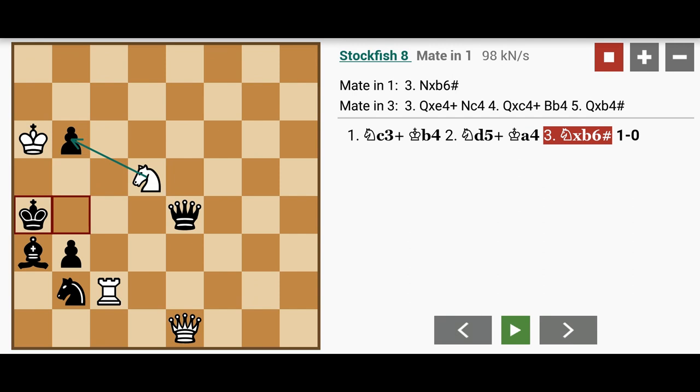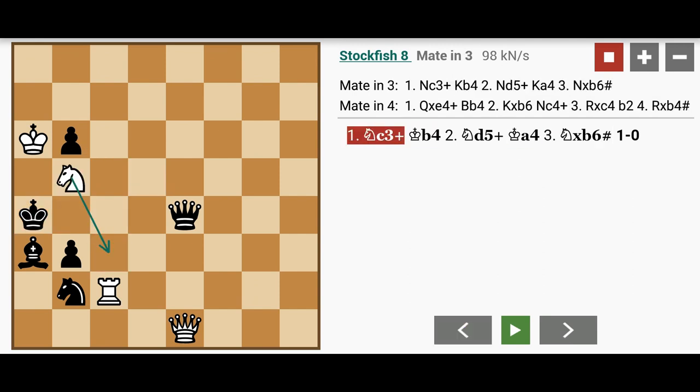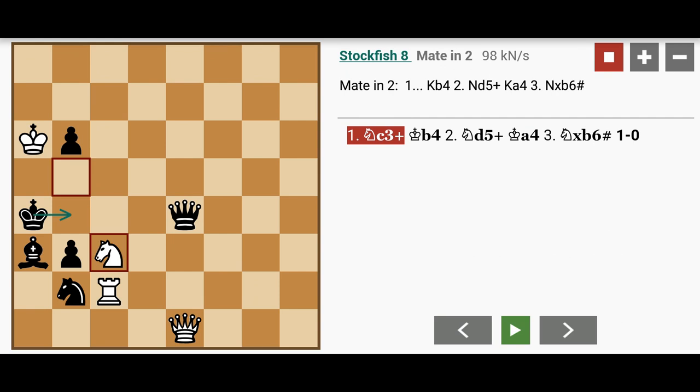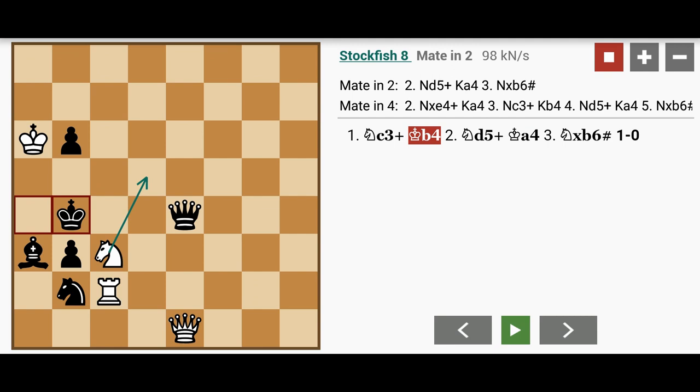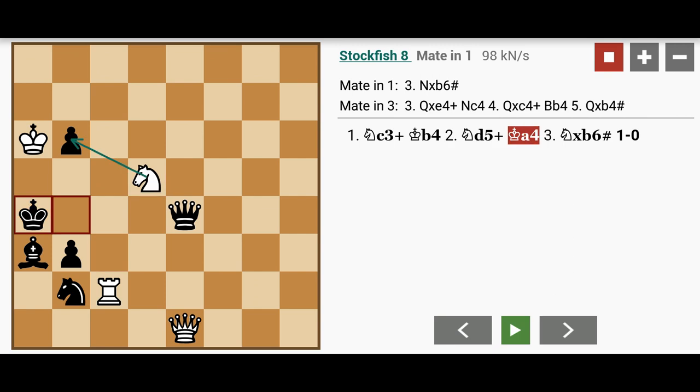So again, white wins in this position with three consecutive knight moves. Knight to c3 check. King to b4. Knight to d5 check. King back to a4. And knight to b6. Mate.